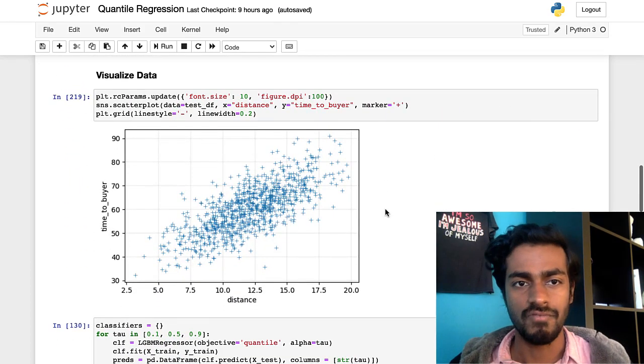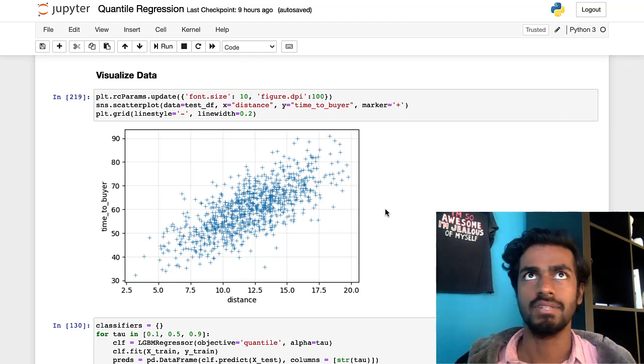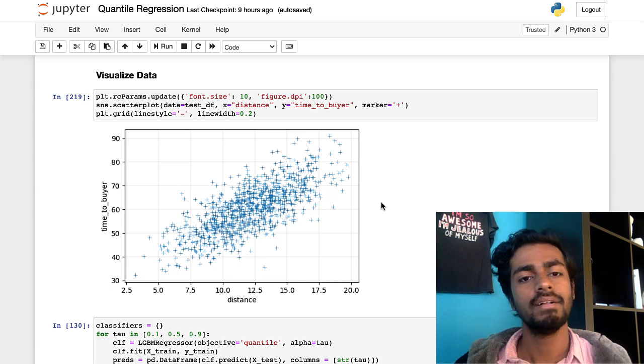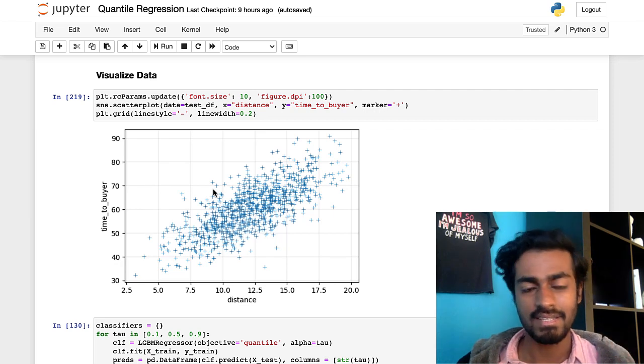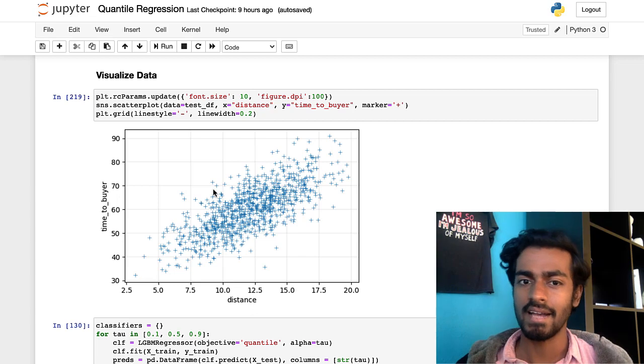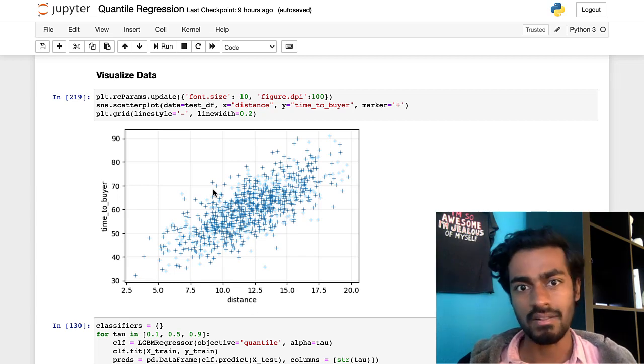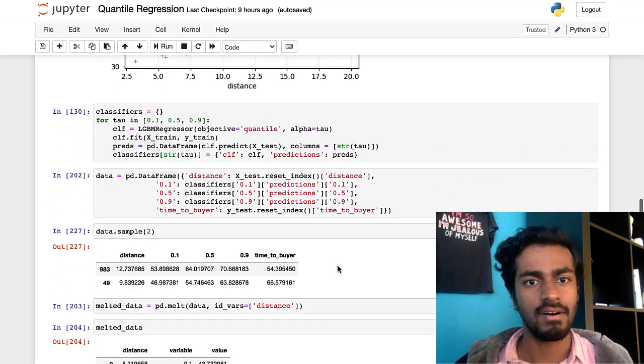So let's first visualize some of the test data. So the test data is now like it's a 10 percent so that's about 1,000 samples right. So plotting distance versus time to buyer you get this little pretty chart you can kind of see it is a linear relationship between distance and time to buyer so it actually shouldn't be too difficult to model this data.